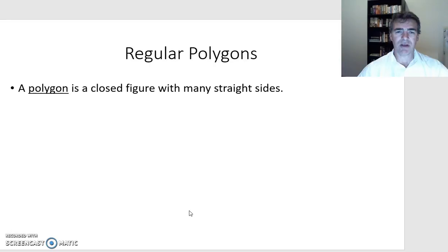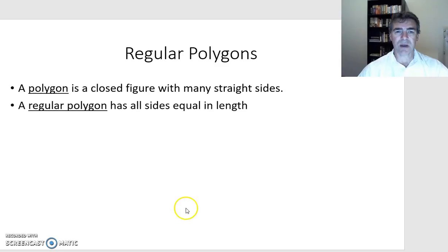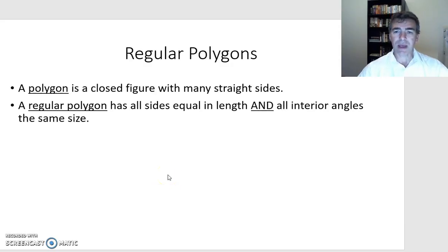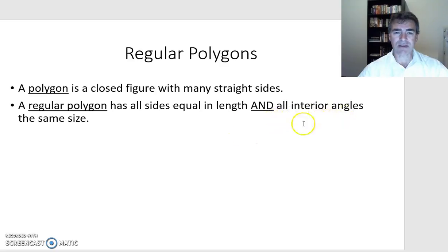First of all, we need to know what a regular polygon is. It's a closed figure with many straight sides. A regular polygon has all sides equal in length, and all the interior angles are the same size. It's not just enough to have all sides equal — we also have to have all inside angles the same size, otherwise it is not a regular polygon.